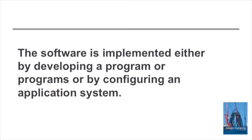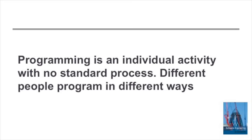Implementation can be done by developing a program, and in that development we may reuse components as part of the system. Or sometimes it's done by configuring an application system by writing configuration instructions which tailor that generic application system to a specific set of customer requirements. Programming is an individual activity — there isn't really a process for programming. People program in different ways and have developed their own styles. Sometimes a company has some standards for setting out programs, but the actual intellectual process of programming differs from one individual to another.